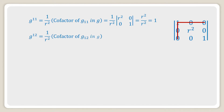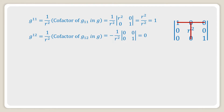Now g^12 is equal to one over r² into the cofactor of g_12 in g, which is equal to minus one over r² into the determinant of 0, 0; 0, 1. After simplification we get the value as zero.